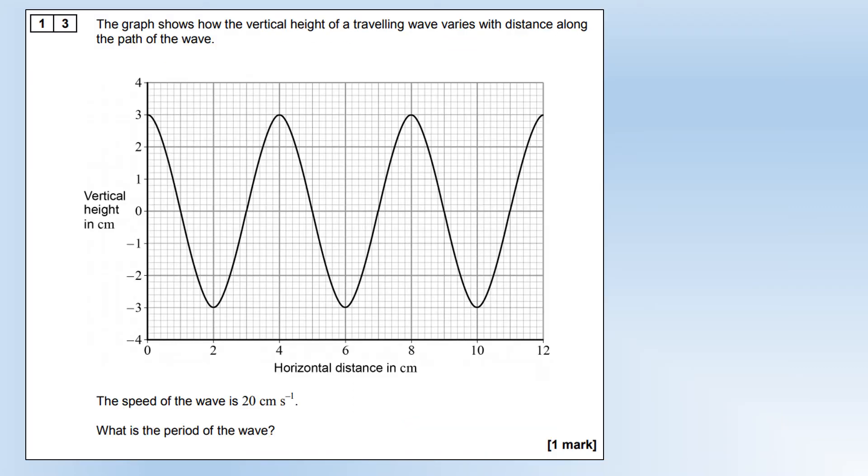The graph shows how the vertical height of a travelling wave varies with distance along the path. The speed is 20 centimeters per second. What is the time period? From the graph, we can measure that the wavelength is 4 centimeters. Since both the speed and the wavelength are in centimeters, we can just divide those and get a frequency of 5 hertz, which means the time period is 0.2 seconds.